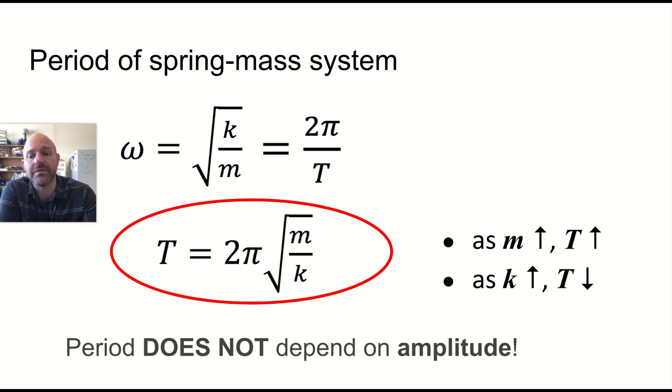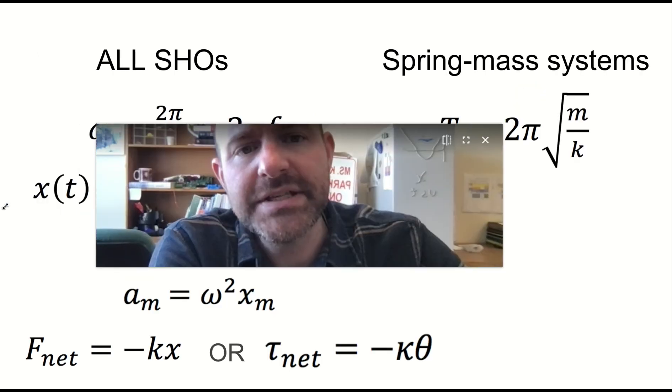And that fits with what we observed in the lab. As mass goes up, the period goes up. As K goes up, the period goes down. And again, it doesn't depend on the amplitude.